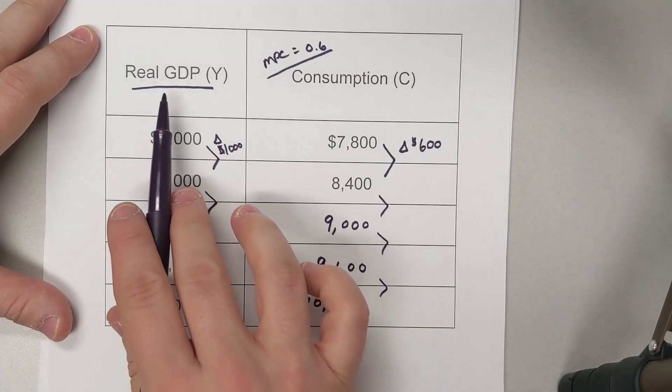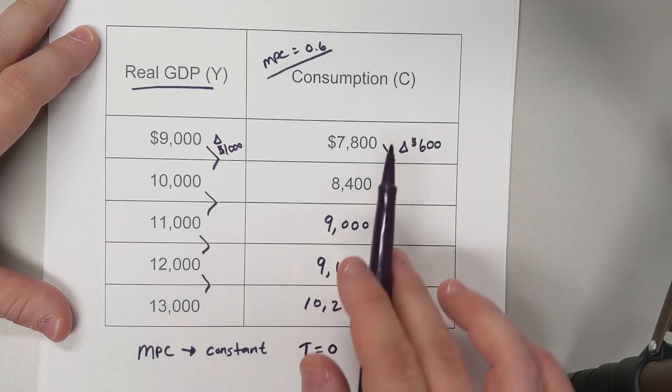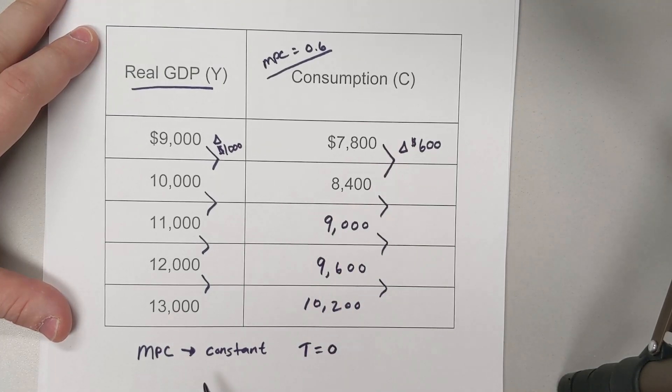And that's how we solve one of these problems where we're given values of real GDP, a few values of consumption, and we know MPC is constant, so we can fill out the rest of this table.